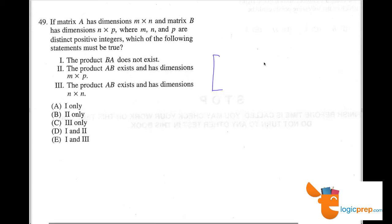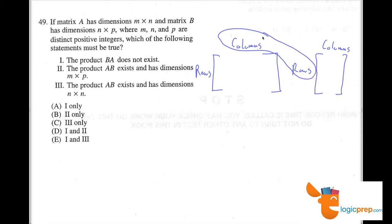With matrices, we always have rows by columns and rows by columns. When we're multiplying matrices, the number of columns and rows are always going to be the same. That's the first rule. The other rule is that when you multiply matrices, it takes on the outside dimensions of the first row and the last column.